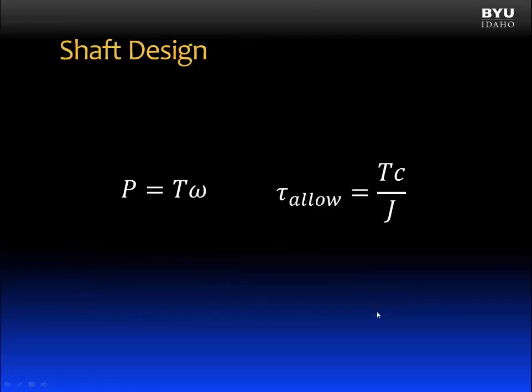For shaft design, we can incorporate these two equations. First for power is equal to the applied torque times the angular velocity. And allowable shear stress is equal to the maximum shear stress, which would be the internal torque, times C divided by J. And if we set these two torques equal to each other, we can then solve for the geometric properties C and J. And we're done.